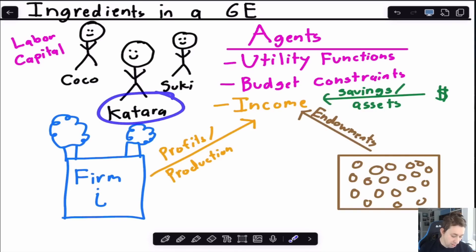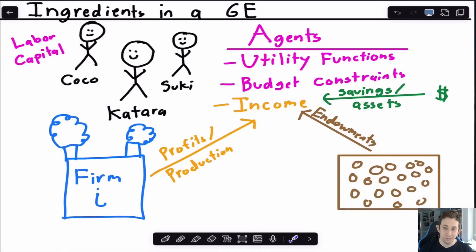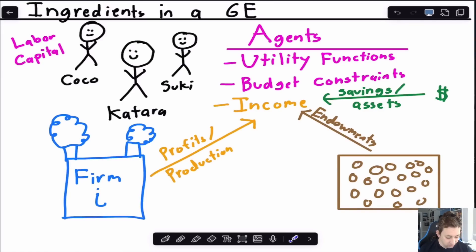For example, if I'm Katara, maybe I've got some labor, I get to choose how much to work, maybe I own some land or machines that I can rent to firms, maybe I work for firms or maybe I don't. Maybe I don't need labor or capital at all — maybe every day I wake up and there's a certain number of coconuts that arrived in a box outside my door, I take those coconuts to the market, turn them in for cash and go buy other things. Do I get to save? Do I get to buy assets? These are all questions that could come up in an Edgeworth box or in a general equilibrium model.